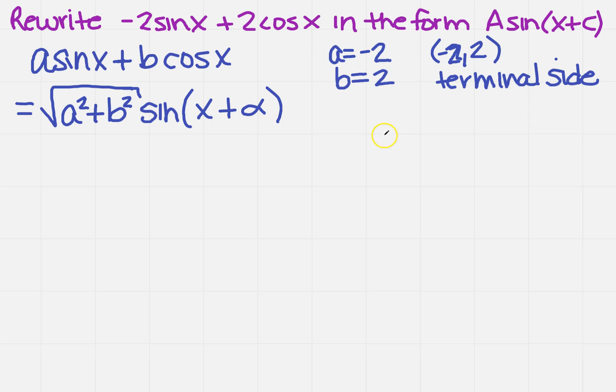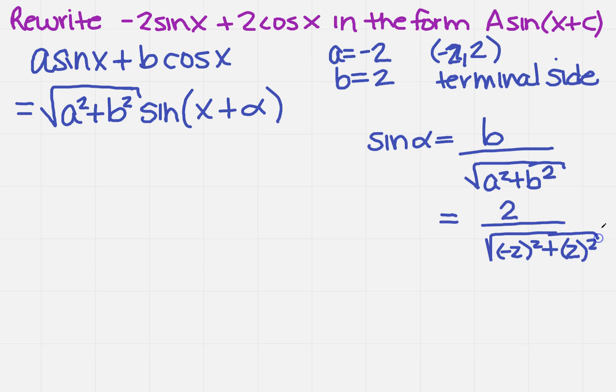What if we do sin(α) = b over the square root of a² + b²? That's based on our trig rules, which you should be very flexible with right now. So if I simplify this, I know b, so I've got 2 over the square root of (-2)² + 2², which will simplify to 2√8 on the bottom.